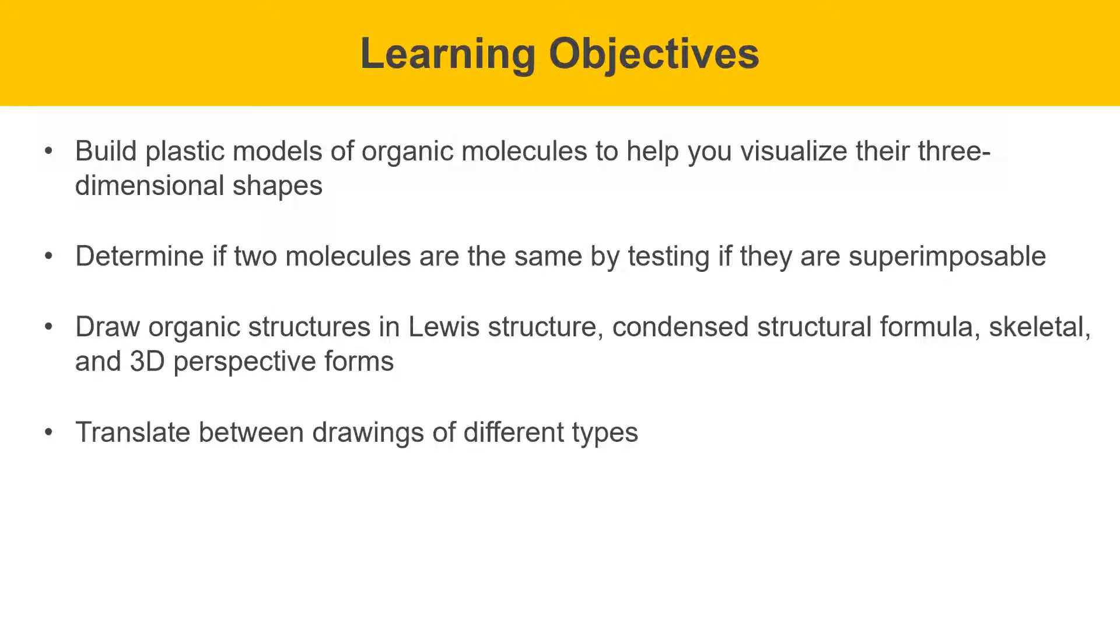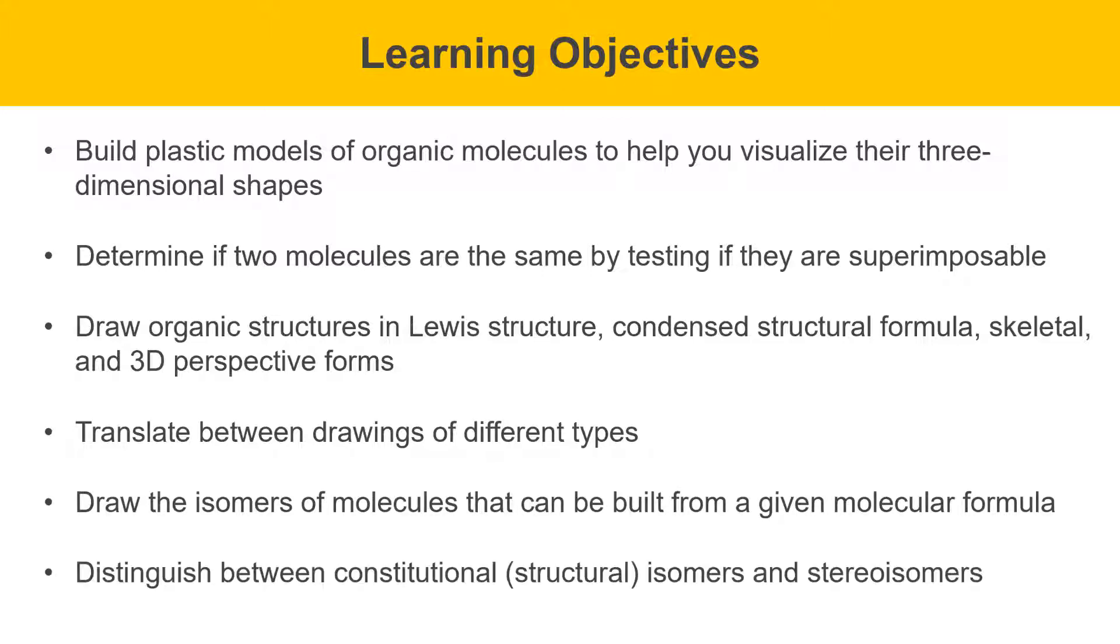We'll translate between drawings of different types. We'll draw the isomers of molecules that can be built from a given molecular formula. And we'll learn to distinguish between constitutional isomers, these are also called structural isomers, and stereoisomers. So at the end of this experiment, you should be able to do all of these things. This will go a long way to helping you get started in organic chemistry, understanding structure.